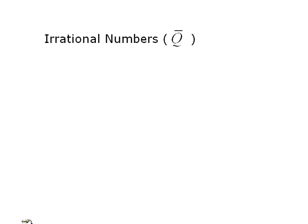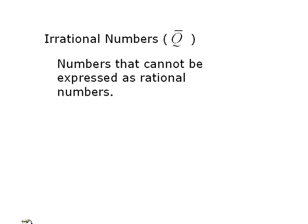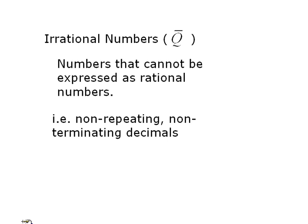The next number system is the set of irrational numbers, q bar, and these have a definition based on what it is not. These are numbers that cannot be expressed in the form a over b, with a and b elements of the set of integers. In other words, they cannot be written as fractions. This can be tricky. And the way most people identify it is by noting that they are non-repeating, non-terminating decimals. So they go forever, and they never end. That's hard to recognize in most cases.